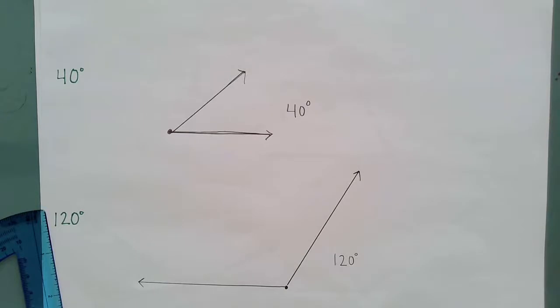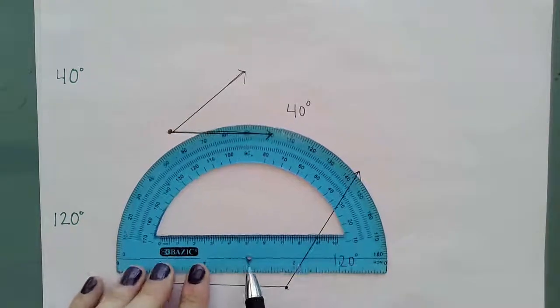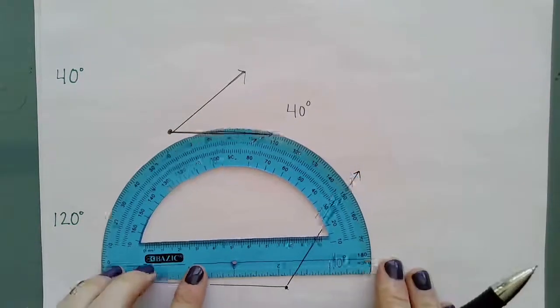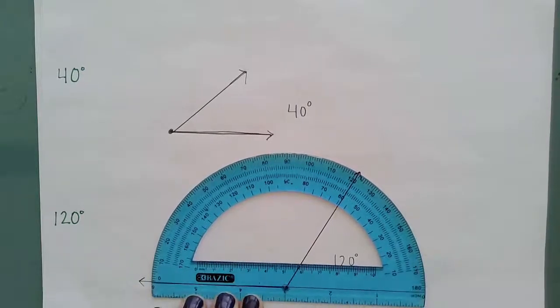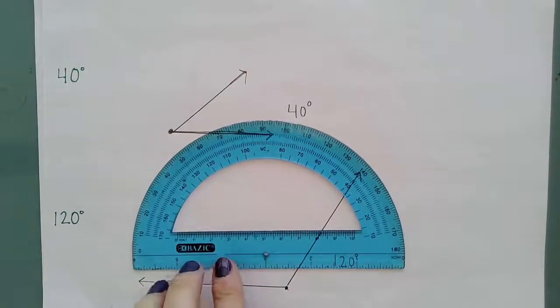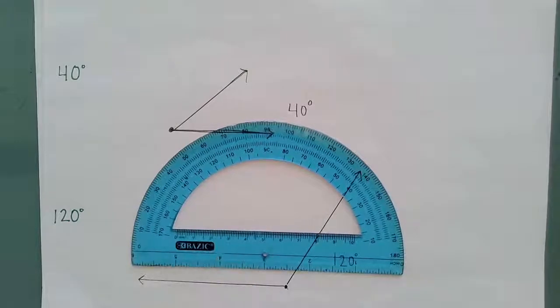So as you begin to use protractors and measure and draw angles, make sure that your center mark of your protractor lines up with your vertex of your angle. And make sure that that zero edge lines up with one of the rays. So that's my zero edge and I've got to be sure that I'm lining it up with one of my rays. Also, as you're measuring, be careful when determining whether to use the inner or the outer scale of your protractor.